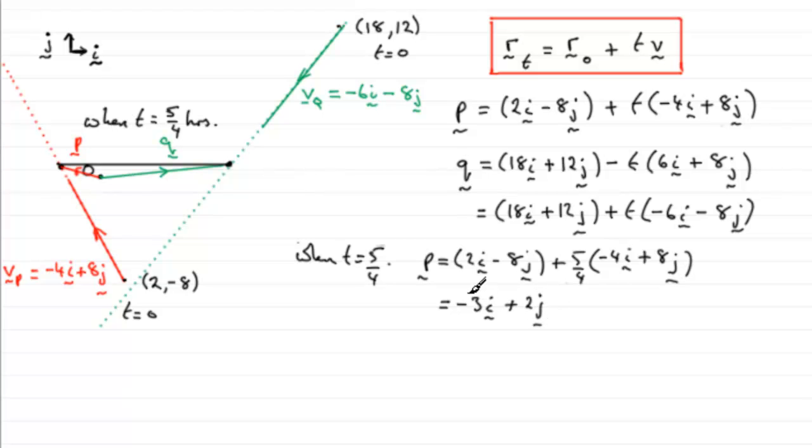So you can see that P is three units to the left here and two units up.